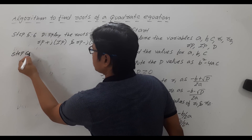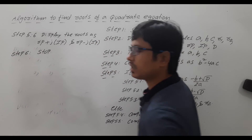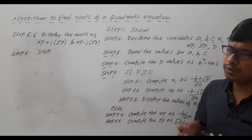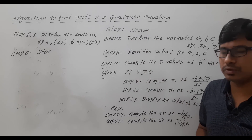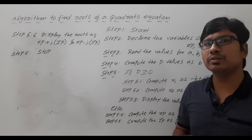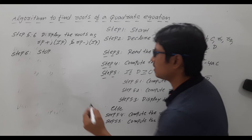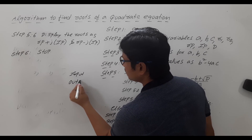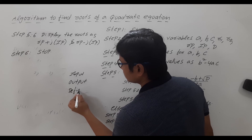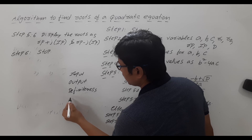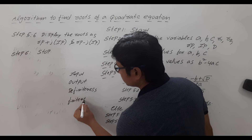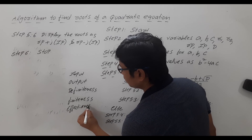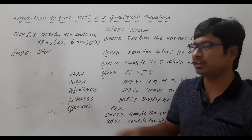Now we need to check the characteristics to verify the algorithm is correct. The five characteristics an algorithm should satisfy are: input, output, definiteness, finiteness, and effectiveness. We will now check whether this algorithm satisfies all five.